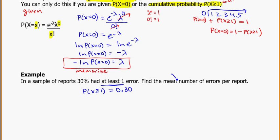Find the mean, which is basically finding lambda, errors per report. So I know my probability of at least one happening, and I need to find my mean. So my first step is to find the probability of it not happening. So again, if it happens at least once, 30% of the time, that means to me it doesn't happen 70% of the time.